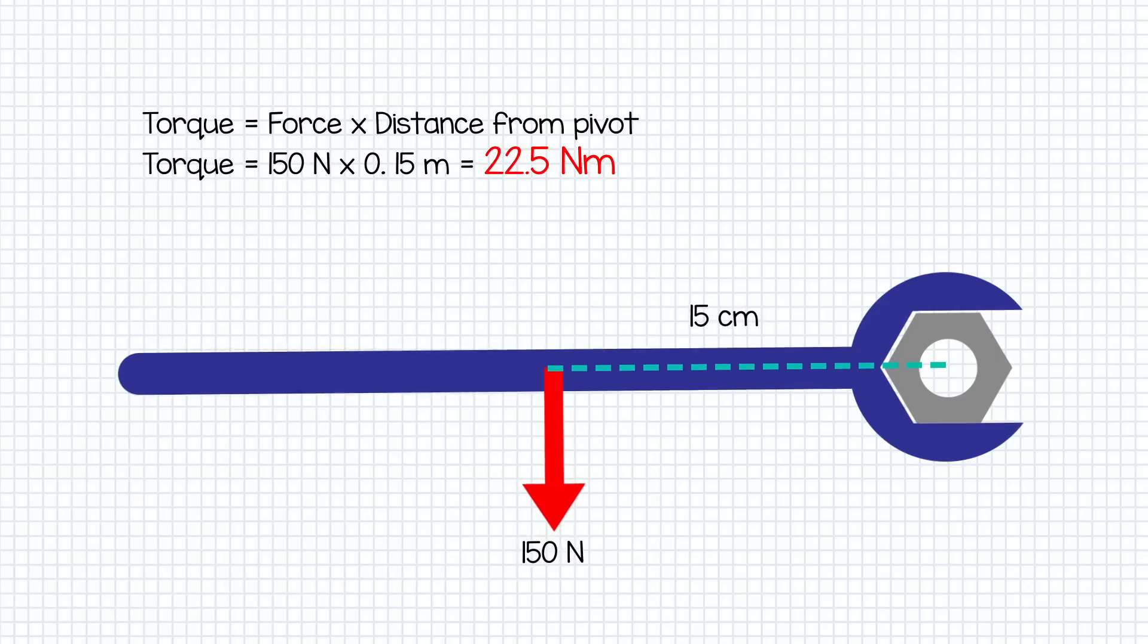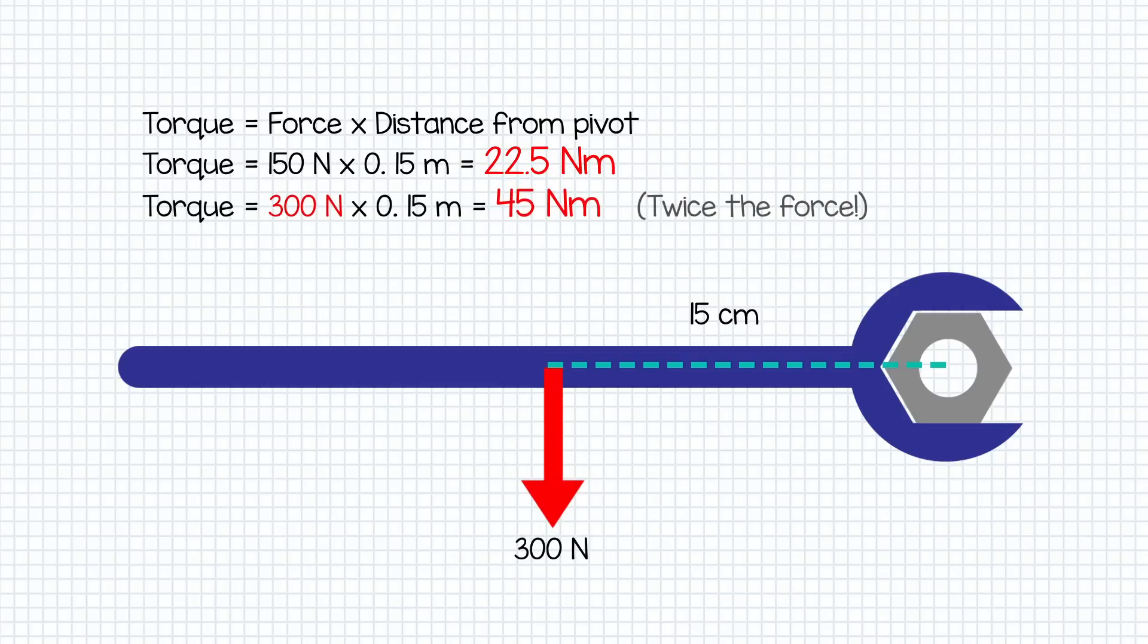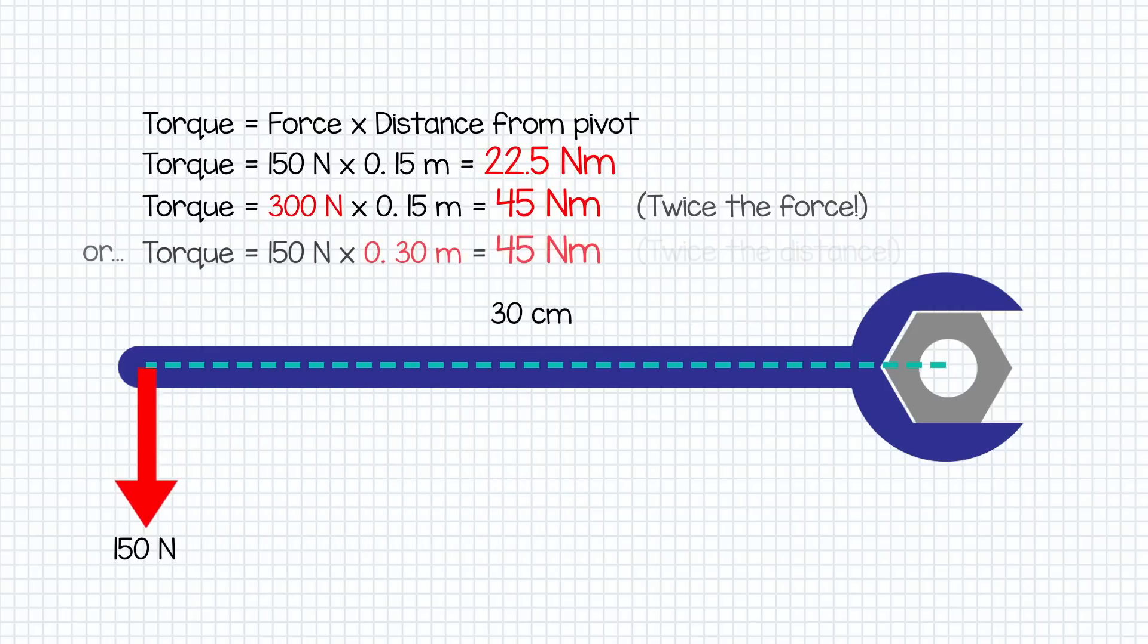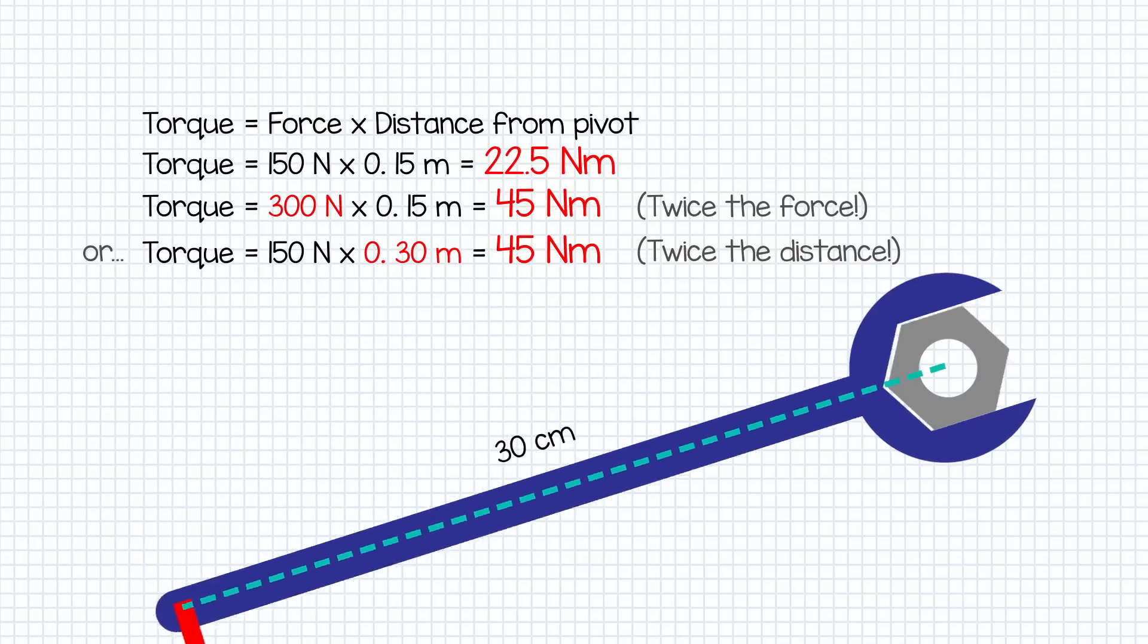Now the nut is really tight and won't come off under this torque so we decide to double the torque. Now we could do that by pushing down twice as hard but let's say that 150 newtons is the hardest we can push. Instead we can just double the distance because that will double the torque. So we push with 150 newtons of force, 30 centimeters from the pivot and that generates 45 newtons of torque causing the nut to come loose.